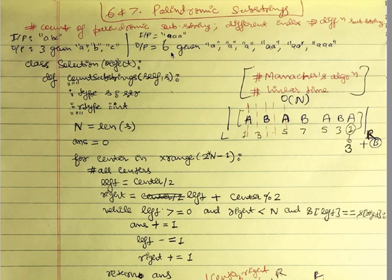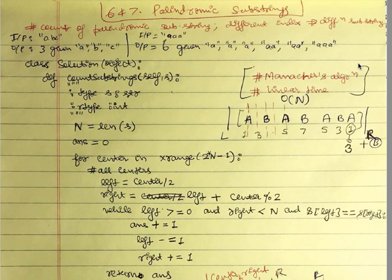For the input 'AAA' there are six possible palindromic substrings: A at the zeroth index, A at the first index, A at the second index, double-A at indices 0 and 1, double-A at indices 1 and 2, and triple-A. Every string is also a palindrome of itself if it reads the same from start to end.